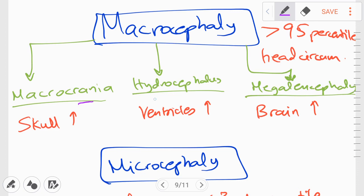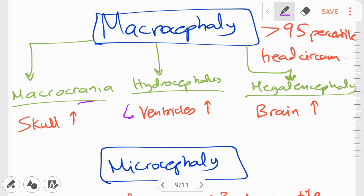Another cause of macrocephaly is hydrocephalus. Hydrocephalus is due to or is basically characterized by enlargement of the ventricles. And this in turn leads to macrocephaly. And lastly, the third cause of macrocephaly is something called megalencephaly. Megalencephaly refers to the brain enlargement due to abnormal metabolic substance accumulation.